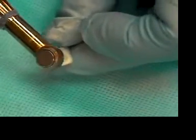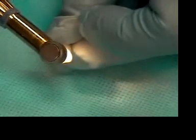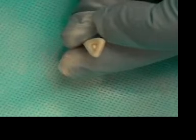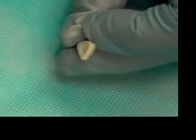Put in a diamond burr and again using the orifice of the canal as a pivot, gently flare out. You have a nice access cavity. You can see where the orifice of the canal is.